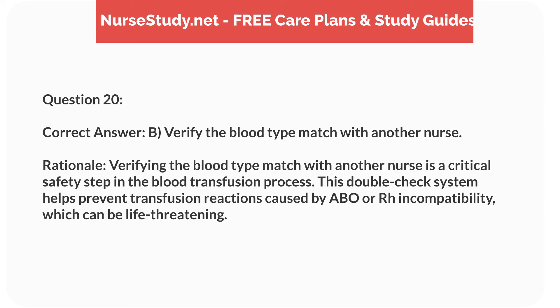Correct answer: B. Verify the blood type match with another nurse. Rationale: Verifying the blood type match with another nurse is a critical safety step in the blood transfusion process. This double-check system helps prevent transfusion reactions caused by ABO or RH incompatibility, which can be life-threatening.